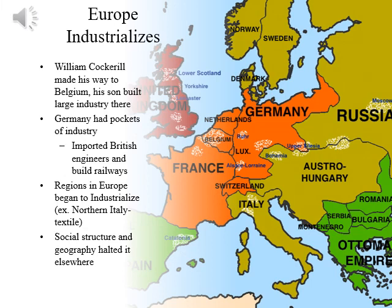Industrialization begins to spread throughout Europe. As William Cockerell made his way to Belgium with his son, they built a large industry there. Germany also had pockets of industry developing as they imported British engineers and built railways throughout their country. Other regions in Europe began to industrialize, such as Northern Italy and their textile industry of fine made garments. In other areas, the social structure and geography halted it.